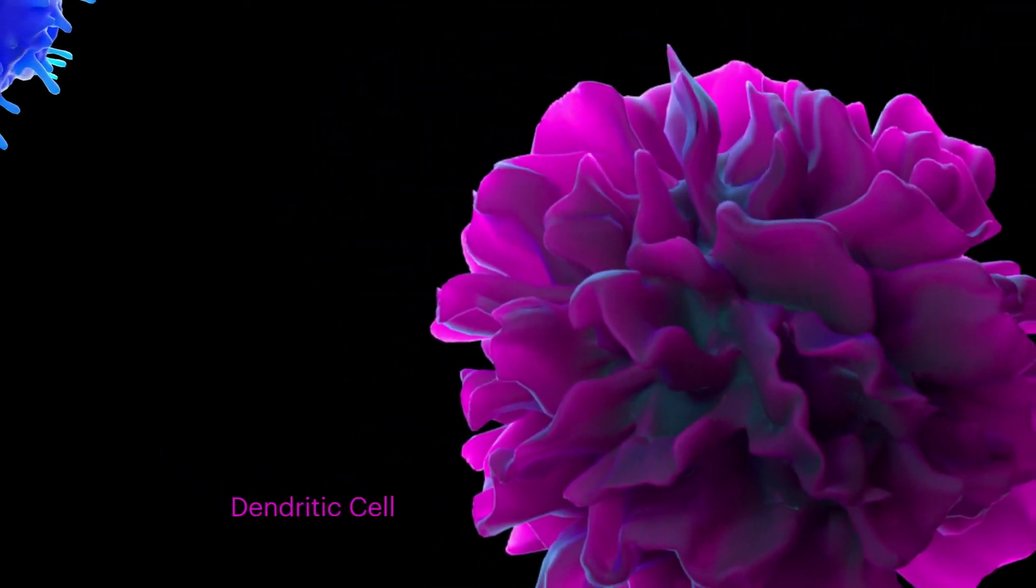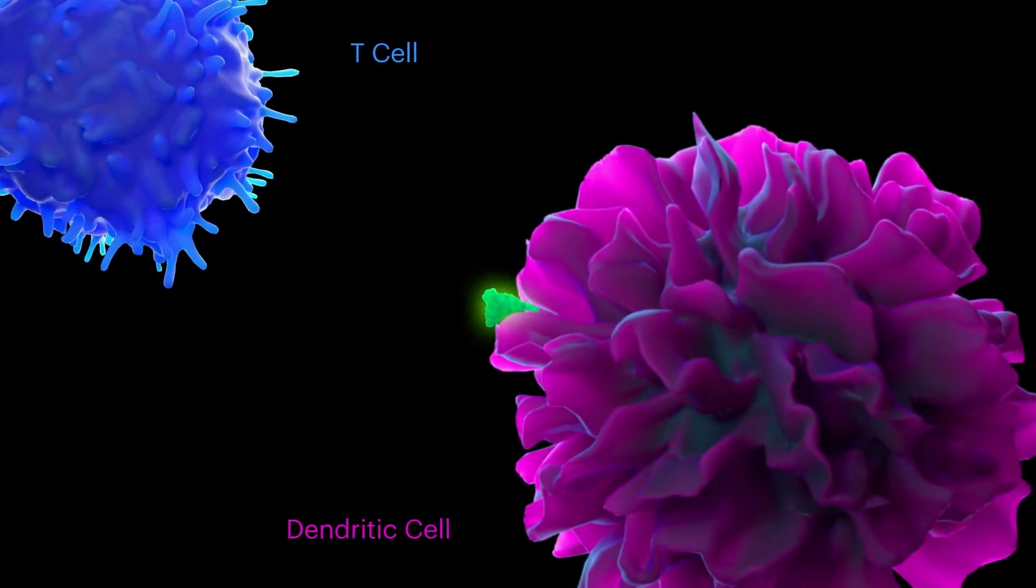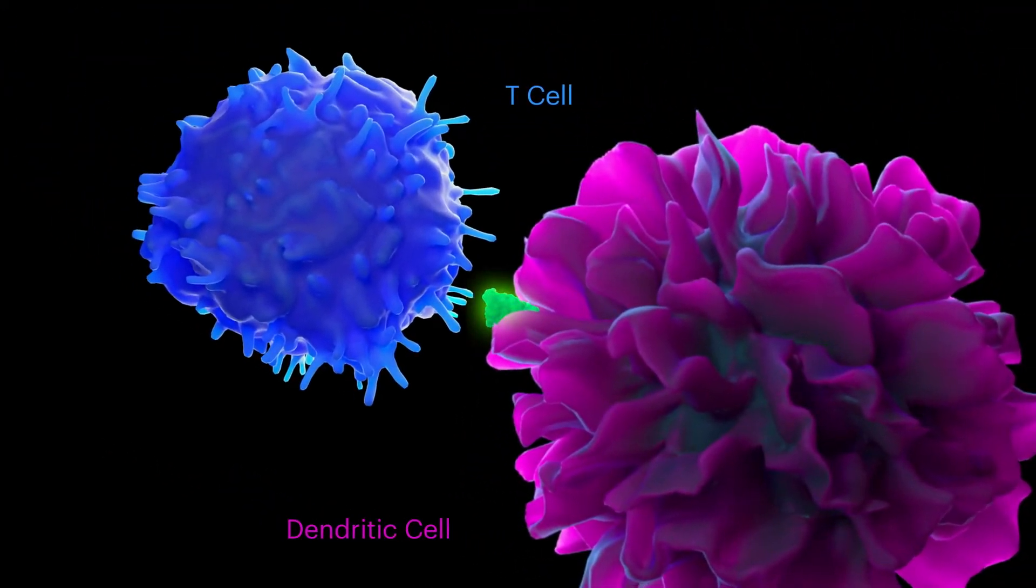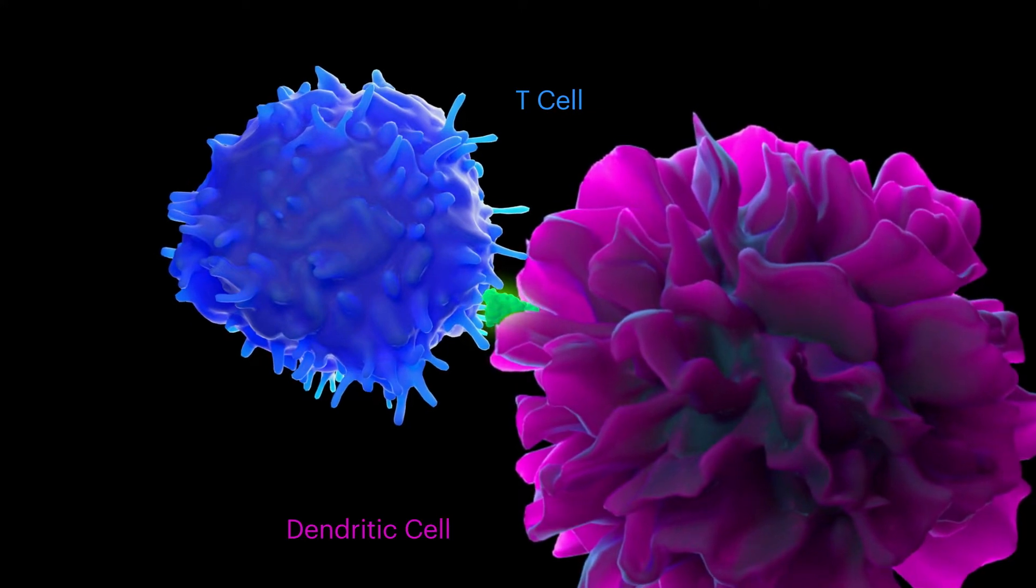The fully activated dendritic cells then present the antigen to T cells in the immune system, which attack the cancer cells producing the antigen.